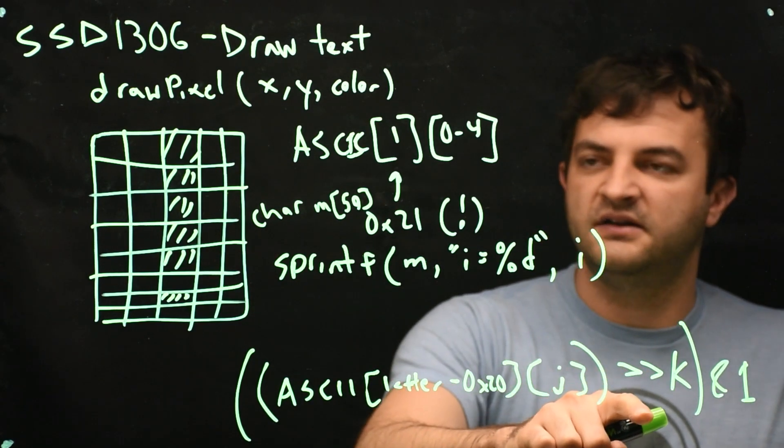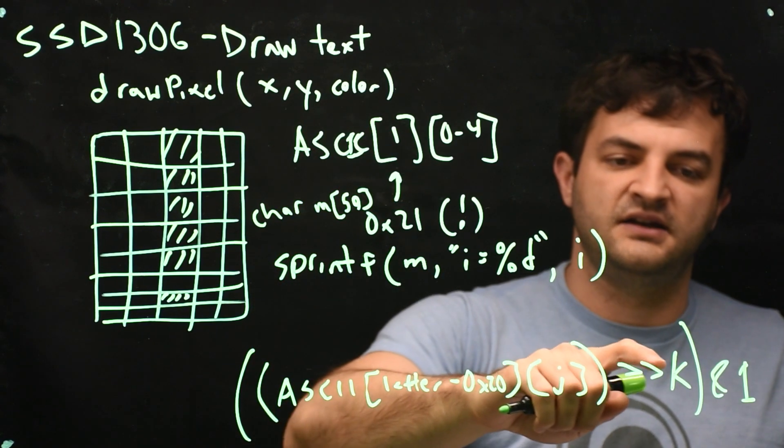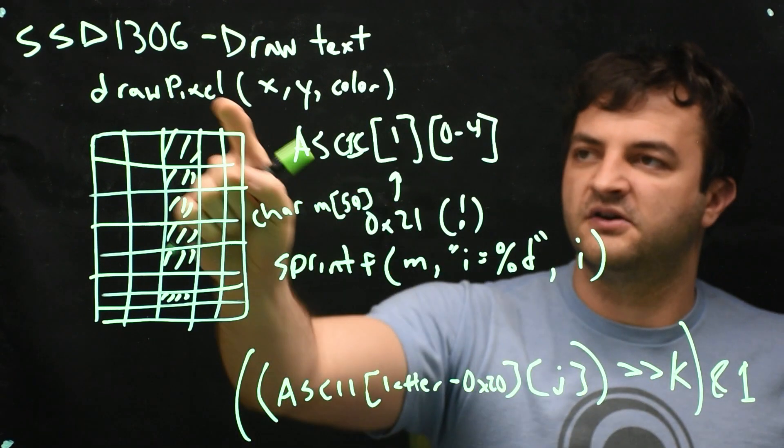And if that bit is a 1, I will call drawPixel to turn it on. So color will be 1. And if this value is 0, I would call the same thing with 0.